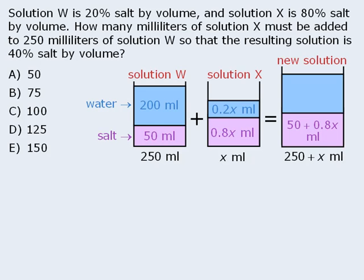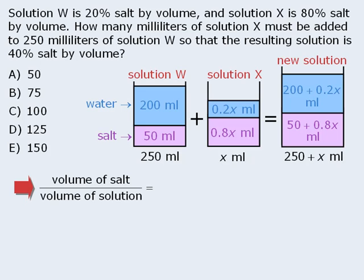Finally, since solution W contains 200 milliliters of water and solution X contains 0.2x milliliters of water, the new solution must contain 200 plus 0.2x milliliters of water. The question concerns the concentration of salt in the new solution, which we can represent with the following fraction. The volume of salt in the new solution is 50 plus 0.8x milliliters, and the total volume of the new solution is 250 plus x milliliters.